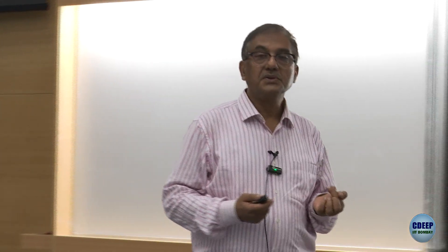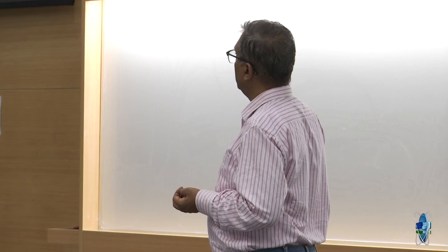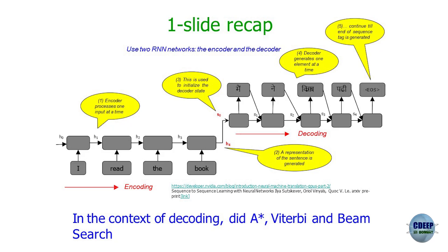It was understood that language properties need to be modeled in the machine. That modeling is based on the fact that words have differential attention. Let's first understand cross-attention. Previously, we covered the star algorithm, Viterbi, and beam search in the context of decoding — where one vector goes into the RNN and gets transformed into a sequence of words in the target language.